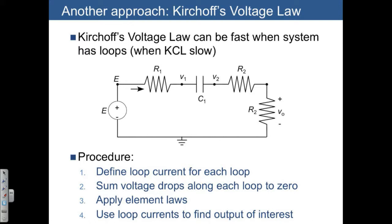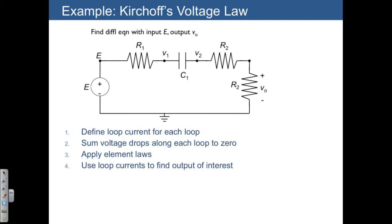We're defining quantities, in this case loop currents, to help us solve for other quantities. So those are ultimately going to be eliminated. Let's actually do this as an example. The first step is to define a loop current for each loop. In this case, there's only one loop in our system, so we'll call it I. That's the current going through each element of our system.